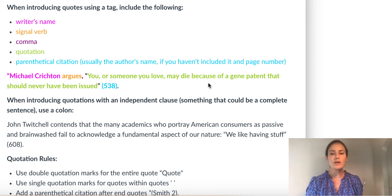You also want to include a signal verb. You can say something like writes, but it's best to use a really strong verb that's more specific than just says or writes. You could say something like asserts, claims, undermines, explains, describes, critiques, because just saying writes or says is sort of vague. After that, you would include the comma. So you would say John Smith,